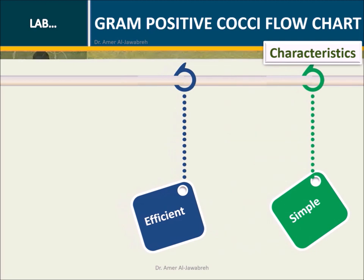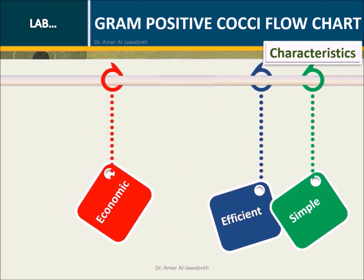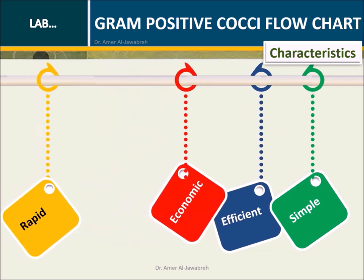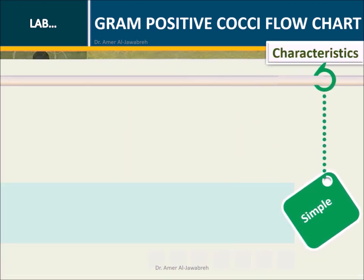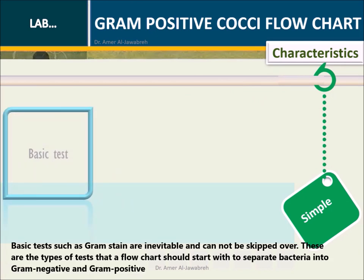Characteristics: simple, efficient, economic, and rapid. Simple — basic tests such as gram stain are inevitable and cannot be skipped over. These are the type of tests that a flowchart should start with, to separate bacteria into gram-negative and gram-positive.